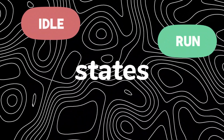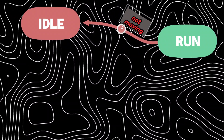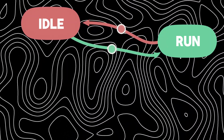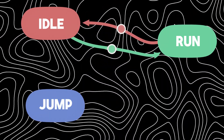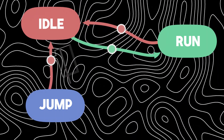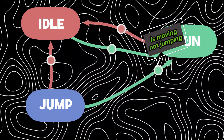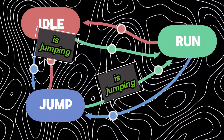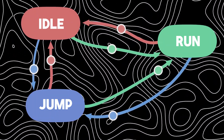We have two states here: run and idle. When the run state transitions to idle, the condition is 'not moving.' The idle state transitions to run with the condition 'is moving.' When we add a new state like jump, the jump-to-idle condition is 'not jumping and not moving,' and run requires 'moving but not jumping.' To transition to jump, the condition is 'is jumping.' This forms a system, but problems arise when we add more states.